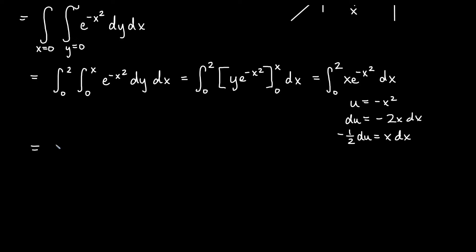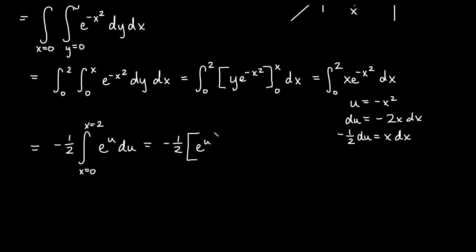So I'm going to factor out the negative 1 half from my u substitution. These are x bounds because we're integrating dx, so I'll leave these as x equals 0 to x equals 2 and not solve for new u bounds. With our u substitution, we simply get e to the u du — that's just about as easy as it gets. So we'll get negative 1 half, and the antiderivative of e to the u is just e to the u again, evaluated at x equals 0 to x equals 2. Back substituting, we get negative 1 half times e to the negative x squared from 0 to 2.